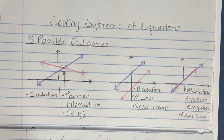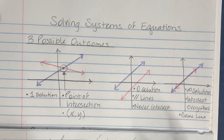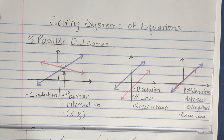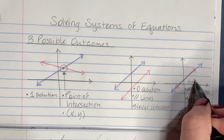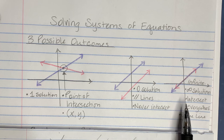The third option is what happens when you graph the lines and they land on top of each other. Notice the purple or blue line is there, and the red line is on top of it. These lines cross everywhere — at all points on the line — which means there is an infinite number of solutions. You can use the infinity symbol or write 'infinite.' They intersect everywhere because they are physically the same line.